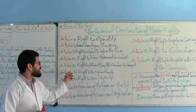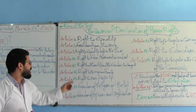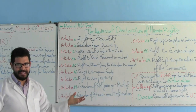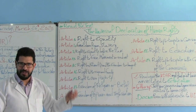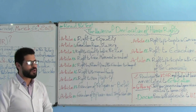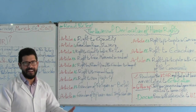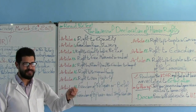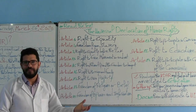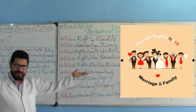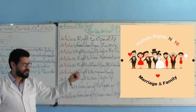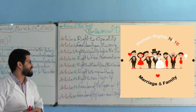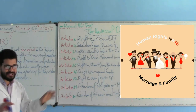Article number 16: Right to marriage and family. Everybody has the right to marry the person they love. We all aspire to have a successful married life and we all want to have children. As you know, Moroccan people place a great value and importance to family life. This picture is the best for explaining Article number 16.